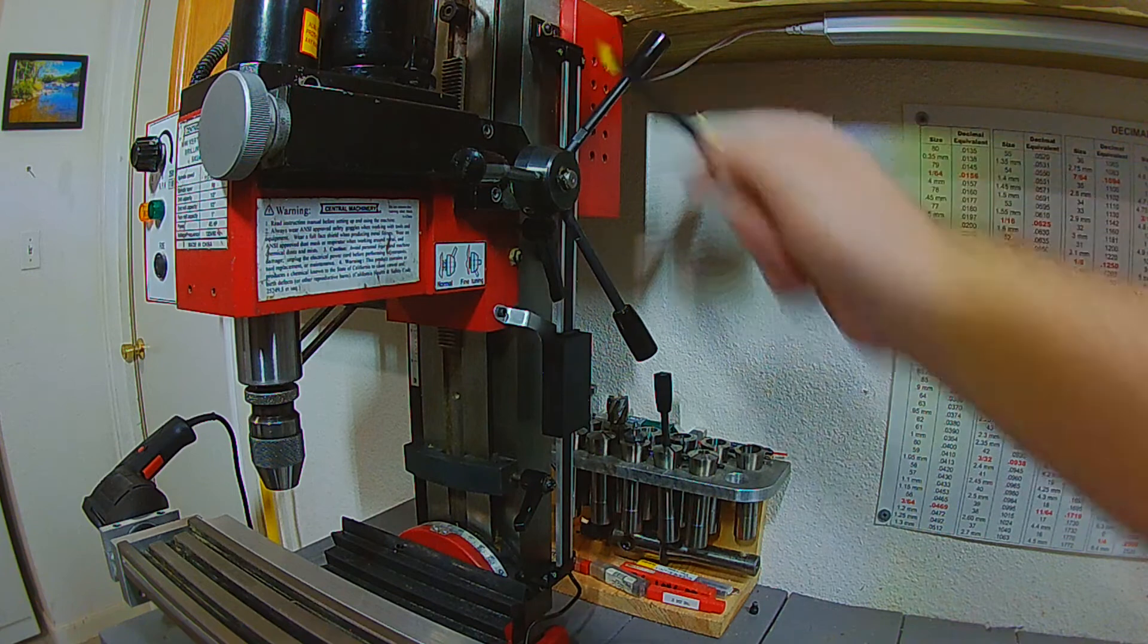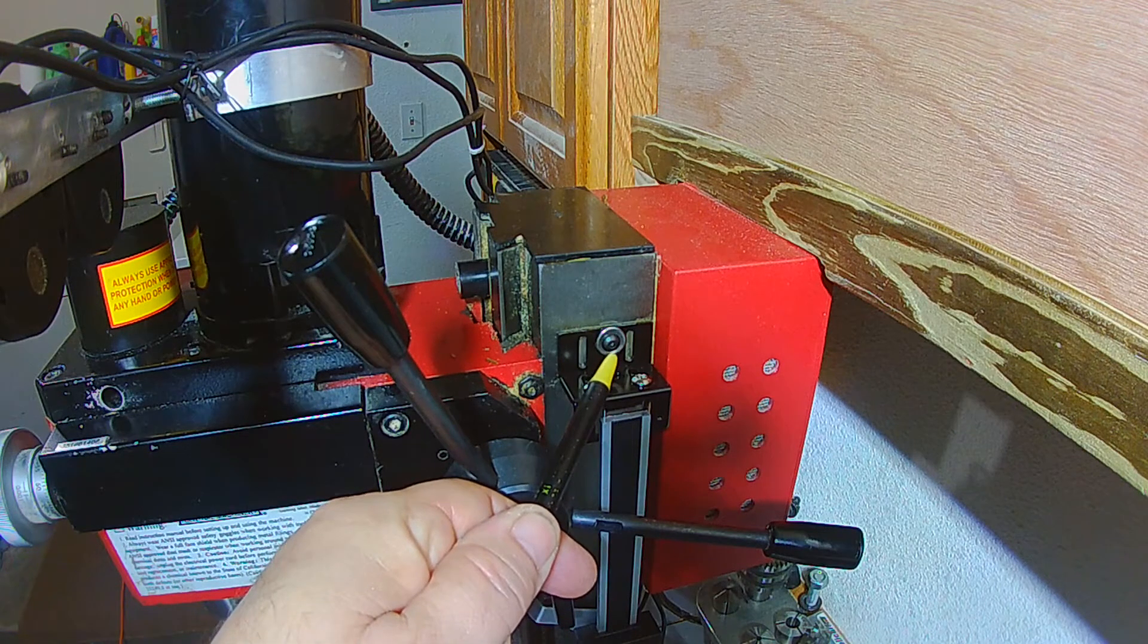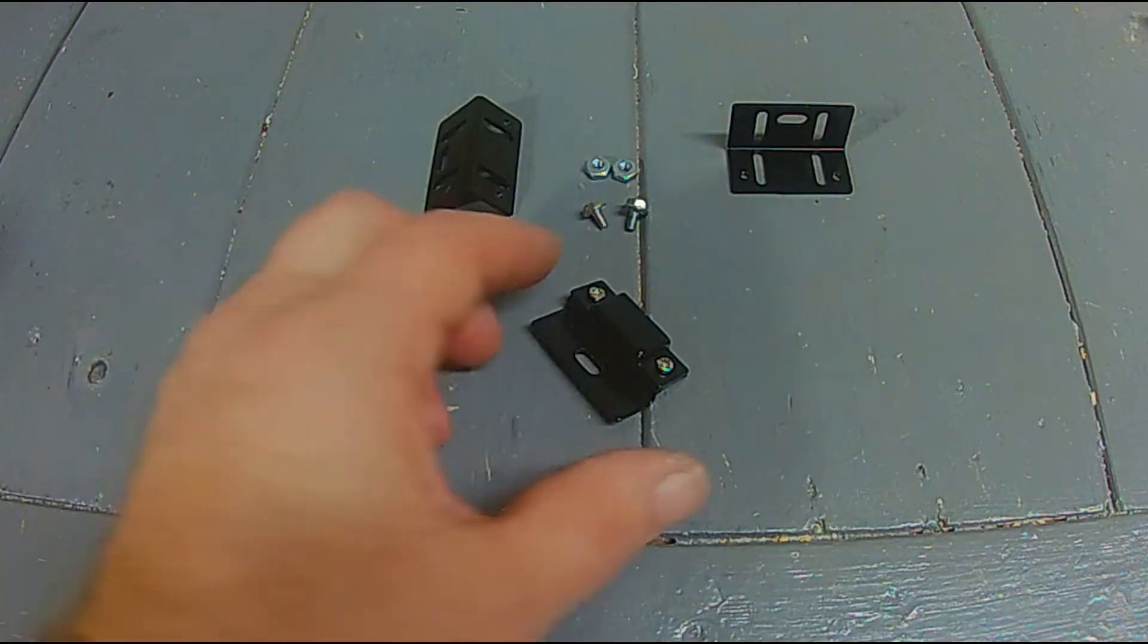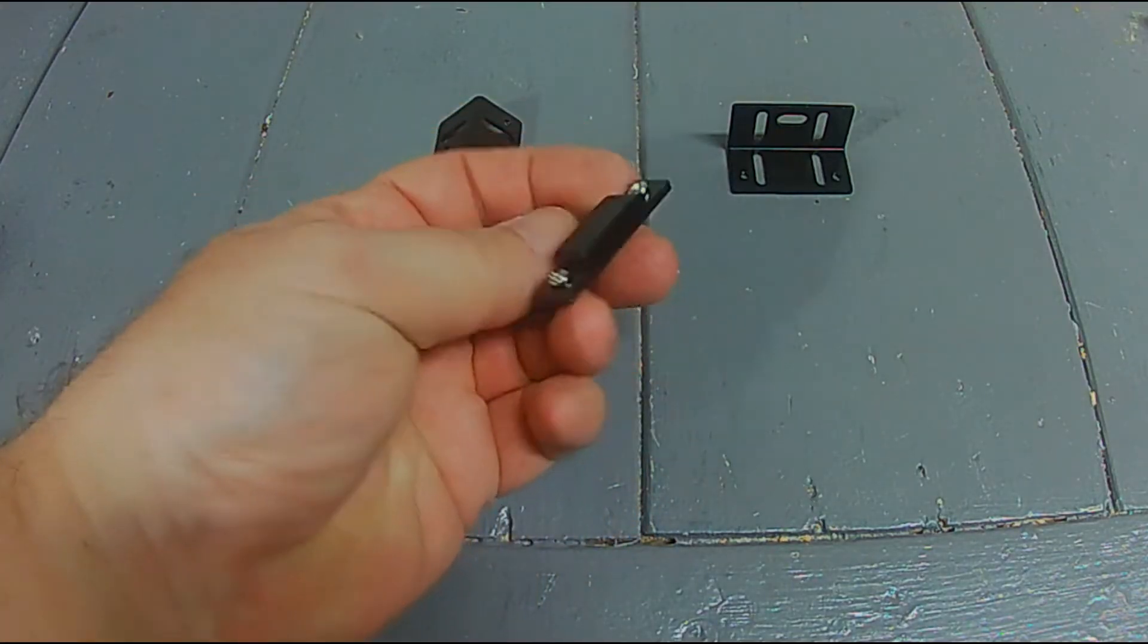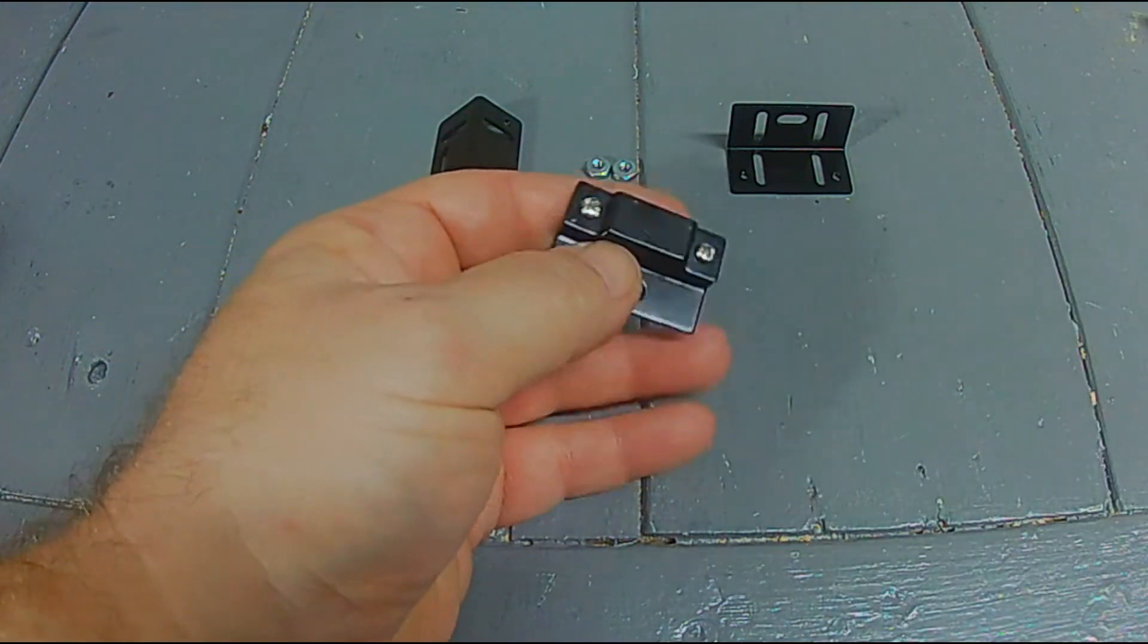As for the Z axis scale, I had to drill two more 8-32 mounting holes on the column. The brackets were a bit short for clearance, so the leftover pieces from the X and Y axis scale kits came in handy.